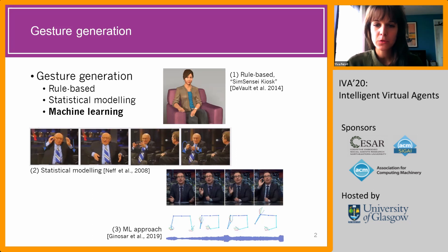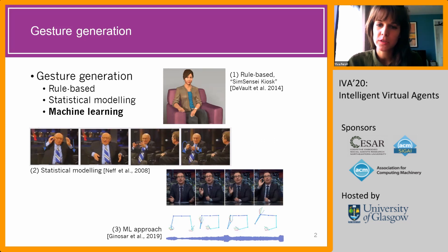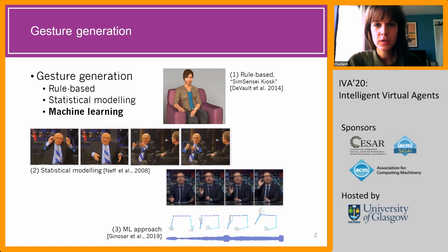This is a problem because there's really a multitude of possible gestures for each speech utterance. There are many possible true gestures and not one true pose sequence. So how do we measure performance? Attempting to model the output gesture as sequences of joint positions or angles can fail to capture the natural variety of gesture and lead to a regression to a mean pose and lethargic, boring motion. So we want to explore other ways to represent gesture than explicit joint positions and angles.